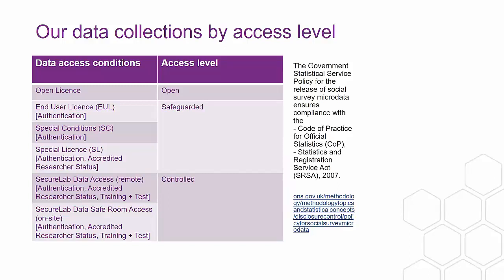So we have open, safeguarded, and controlled data. Open needs no explanation. Safeguarded requires an online registration process and agreement to the end user licence, all done online. Controlled secure lab data requires a longer application process of approximately three months, including a safe researcher training component and a test you must pass before you are allowed to access the data.